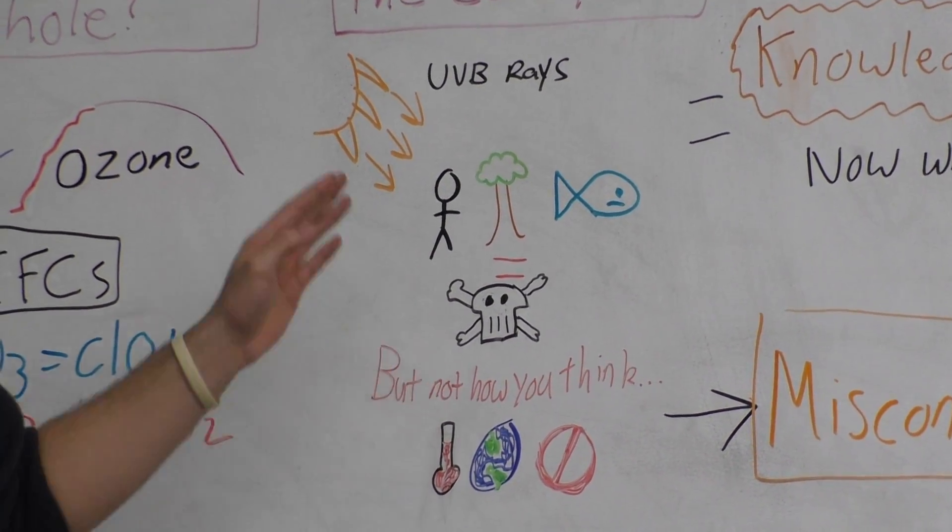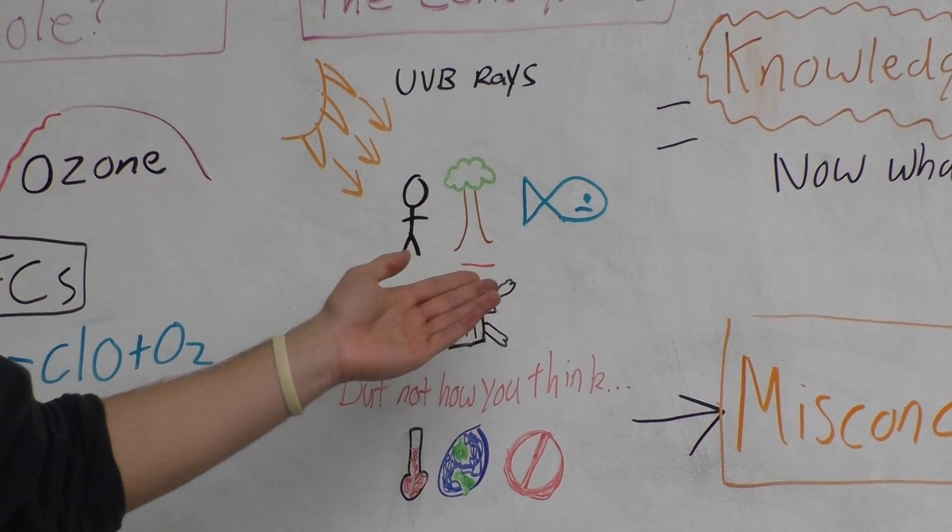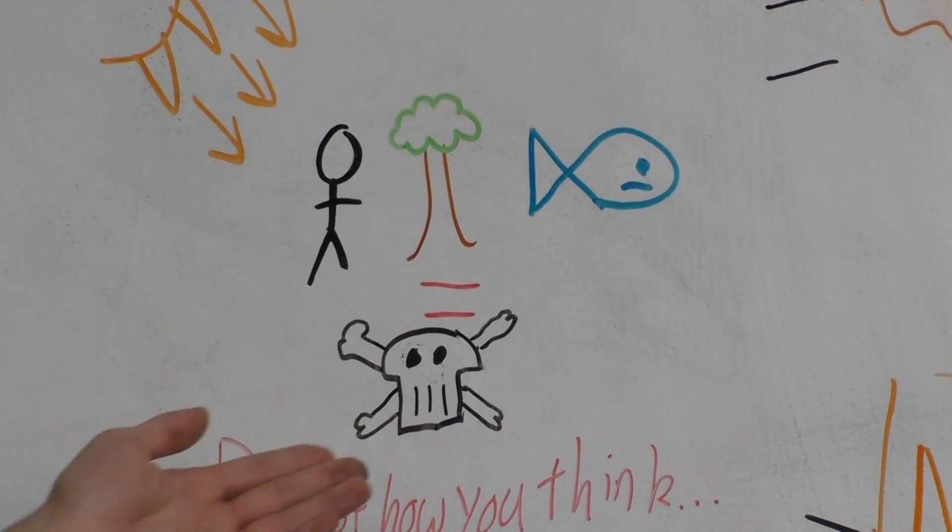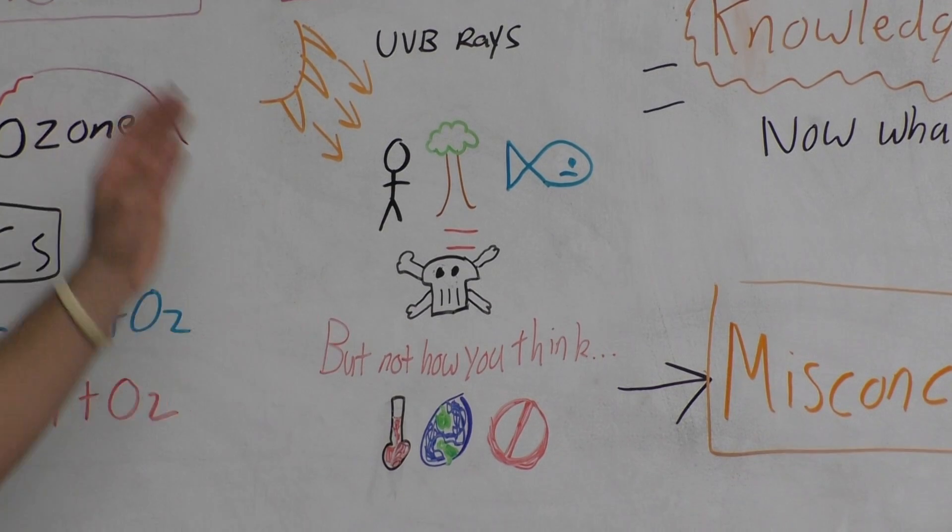Not only do these affect humans, it affects plant life and as well as sea life, and can therefore actually equal death, but not in the way that we initially think the ozone hole could.